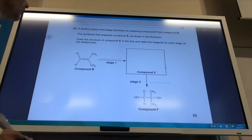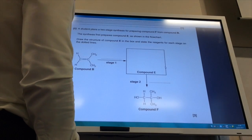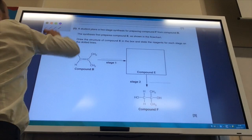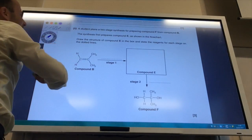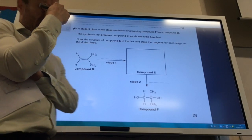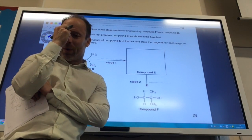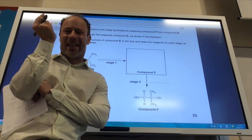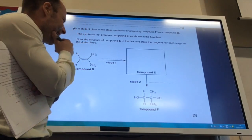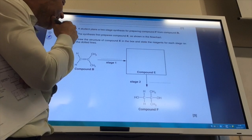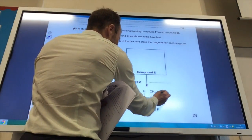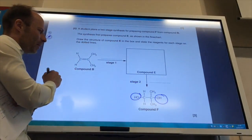Right, now this is quite tricky. Student plans are two-stage synthesis for preparing F from B. So, how can I do that? Well, I've got a double bond, so just think through double bond. What can you react to double bond with? Hydrogen would just make an alkane. That's not going to help you.